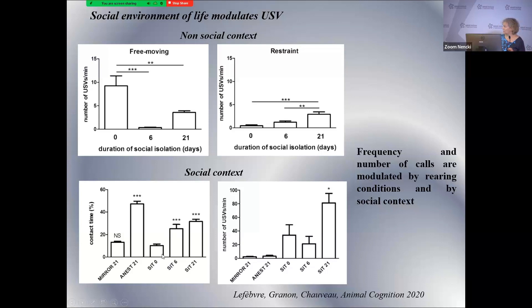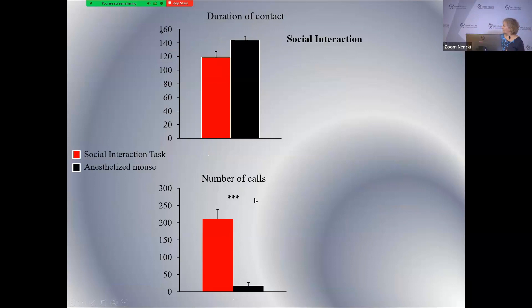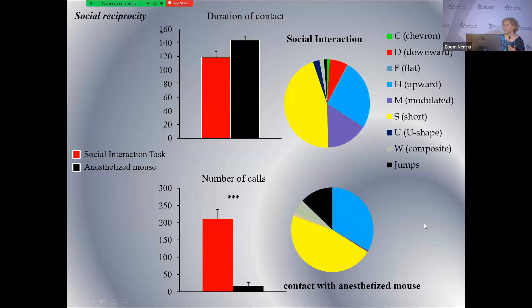In the social context, you can see the contact time animals spend together in different situations: the three social interaction tasks with animals not isolated, isolated for six days, or for 21 days. Isolating animals before the task increases duration of contact and the number of ultrasonic vocalizations. Interestingly, when a male animal makes contact with an anesthetized other male, the time in contact is very high but the number of vocalizations emitted is very small. And the vocal repertoire is dramatically different.